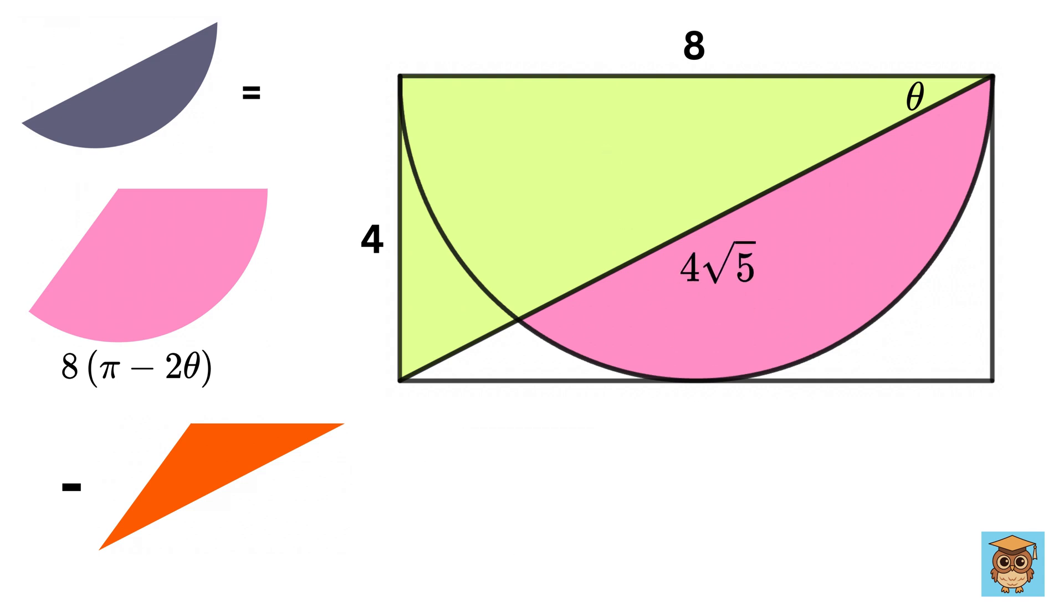So, using trigonometry, sin of theta will be opposite upon hypotenuse, or 4 upon 4 root 5, or 1 upon root 5, and cos theta will be adjacent upon hypotenuse, or 8 upon 4 root 5, or 2 upon root 5. Then, finally, tan theta will be opposite upon adjacent, or 4 upon 8, or 1 upon 2.